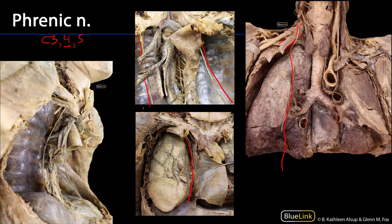We can see these phrenic nerves here. They are lateral to the vagus nerves, which we can see coming down there. The vagus nerve on the right is obscured here by the superior vena cava and bronchotracheal tree, but we can see the phrenic nerve going down to the right hemidiaphragm and the phrenic nerve going down to the left hemidiaphragm.